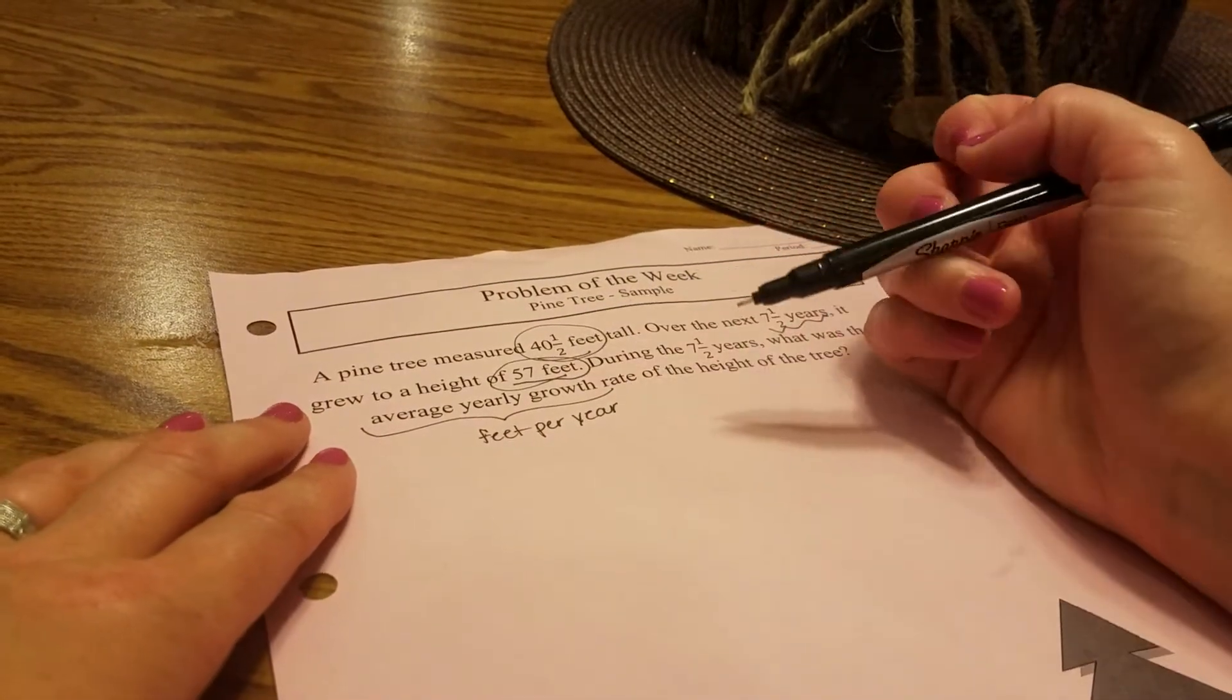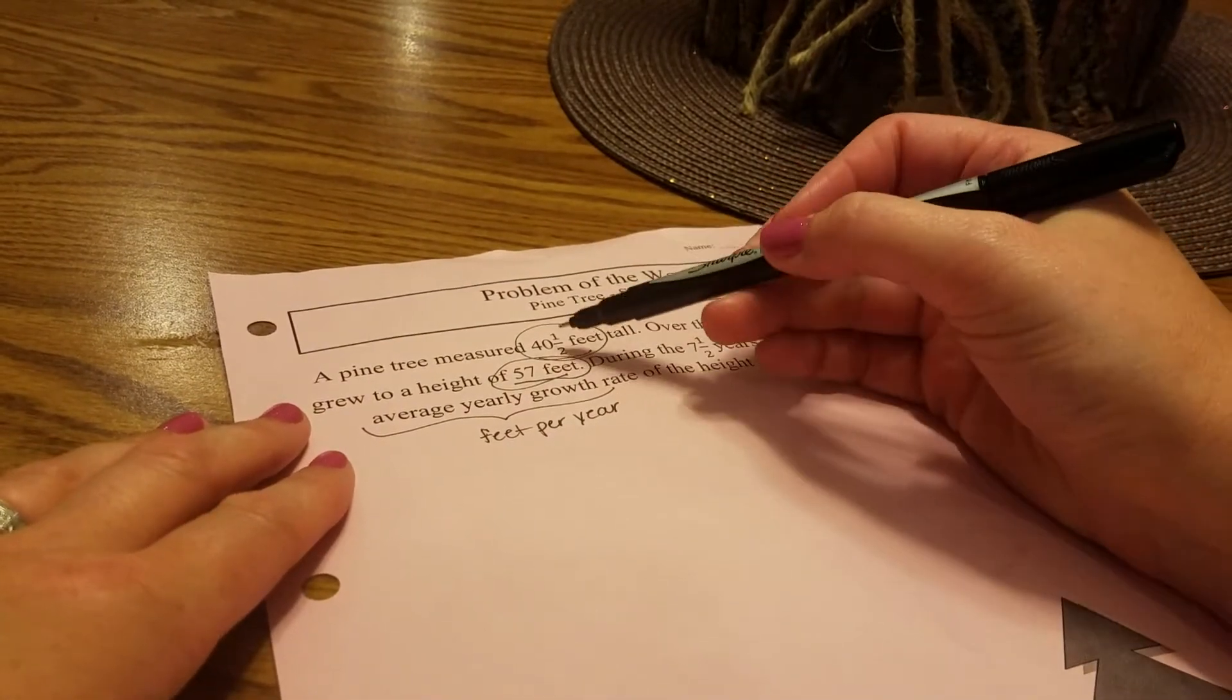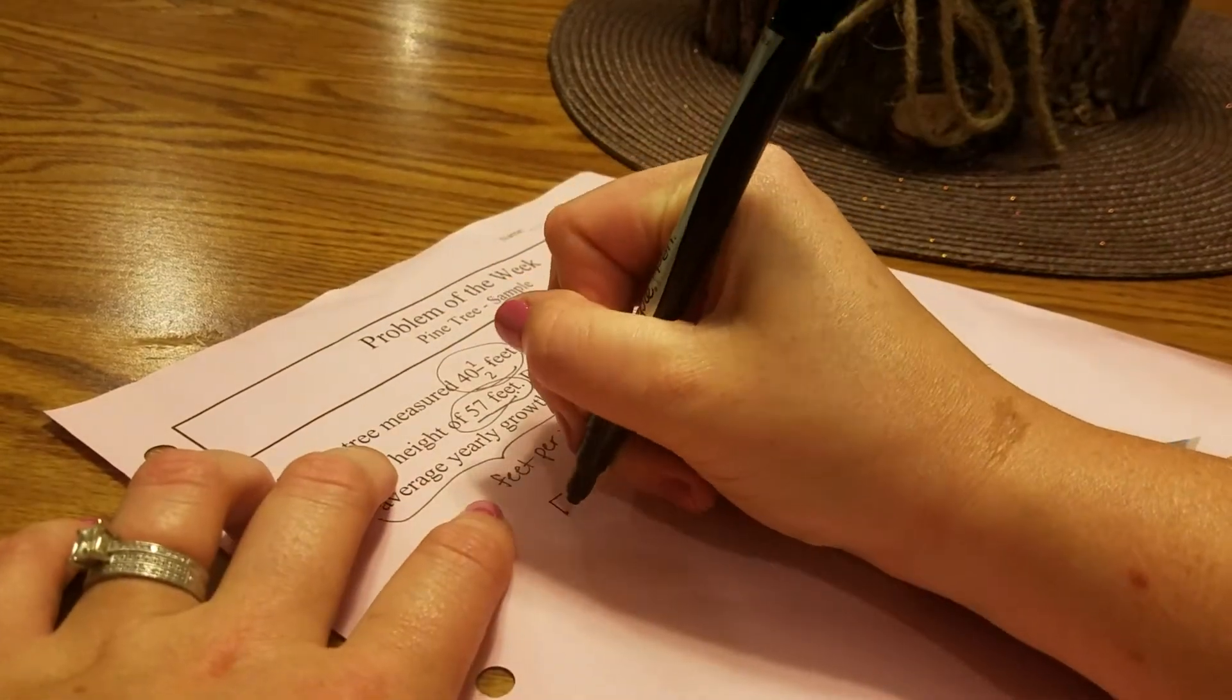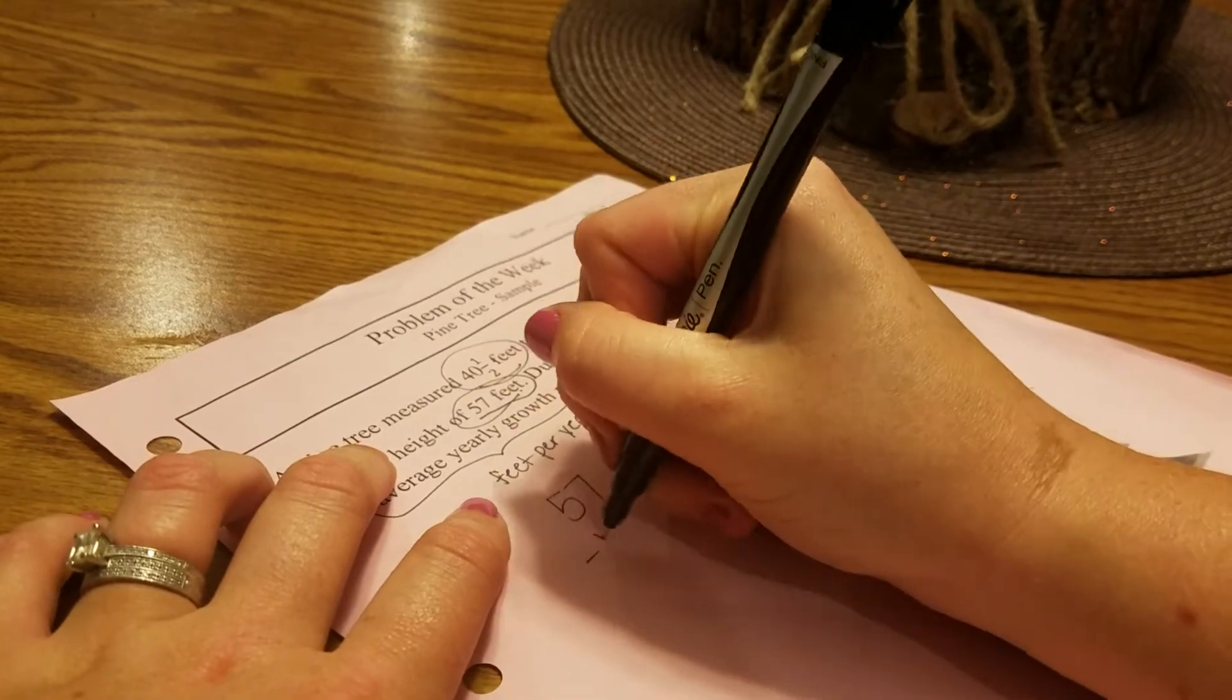What we first need to do is figure out how many feet the tree actually grew. It started at 40 and a half and is now 57. So to find out how much it grew, we need to do a subtraction problem.